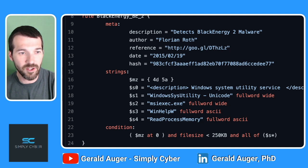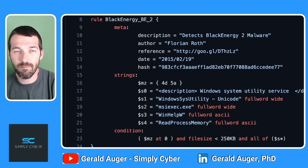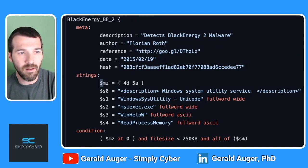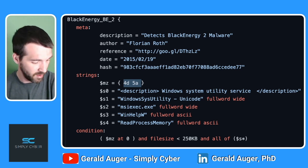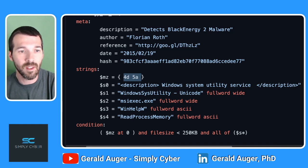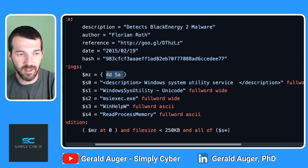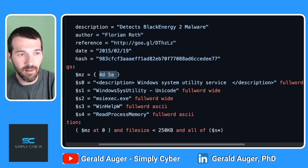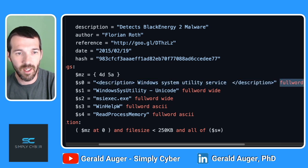For this Black Energy rule, it uses 'import PE' — PE is portable executable, basically Windows binaries. You can see a variable 'mz', which is the magic value for Windows PE file binaries: the hex value 4D5A. You'll always see this at the beginning in hex at the top of Windows files. The variables use 's' as an incremental naming convention, and the rule is looking for specific full strings.